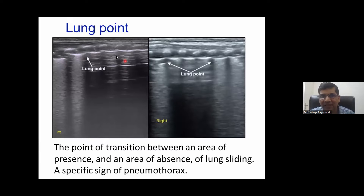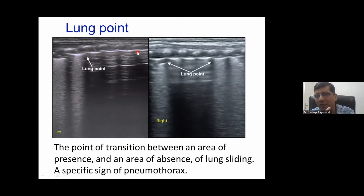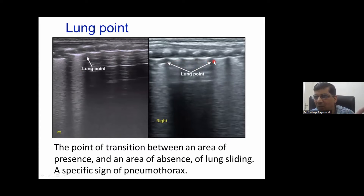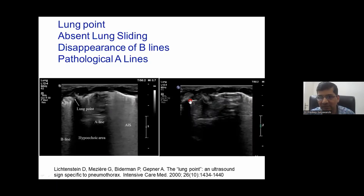Let's recapture. This is the patient — these are the A-lines, these are the B-lines, and this is the lung point, because lung sliding is absent here. I'll show you the video as well. Here you can see: B-line, B-line, A-line, and this is a pathological A-line — and this is the lung point.